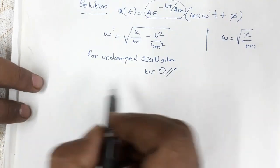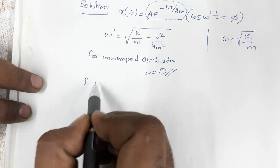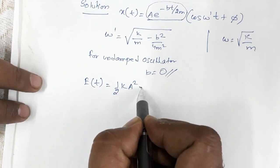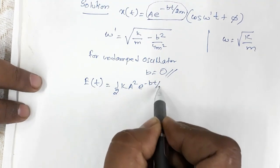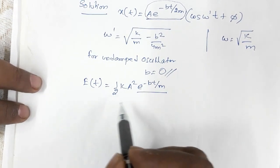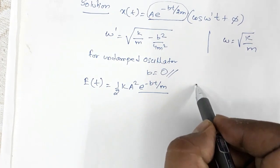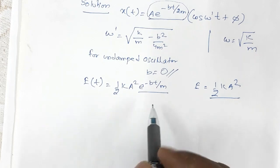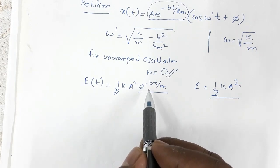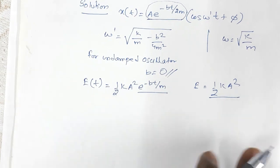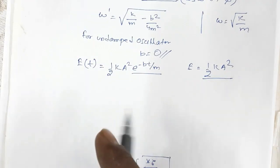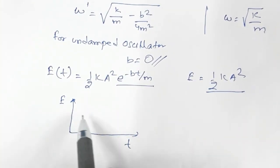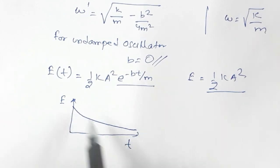The energy of the damped oscillator is given by: E = ½·k·A²·e^(−bt/m). For an undamped oscillator, the energy was the constant ½kA², but here the energy decreases exponentially with time. If you draw the energy versus time graph, it is an exponentially decaying curve.